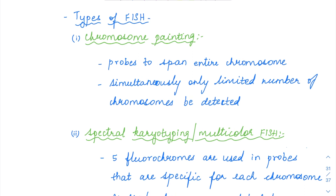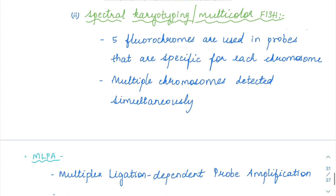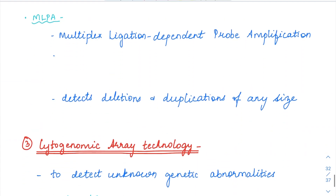The types of FISH include chromosome painting, which uses fluorescent dyes that span the entire chromosome for a single chromosome. Probes are used against a single chromosome so you can study the entire chromosome. While spectral karyotyping, also called multicolor FISH, uses at least 5 fluorophores — 5 different dyes — spanning multiple chromosomes, so you can detect multiple chromosomes simultaneously.